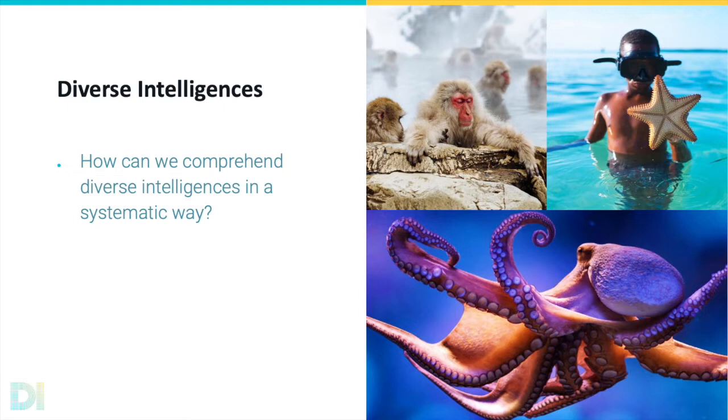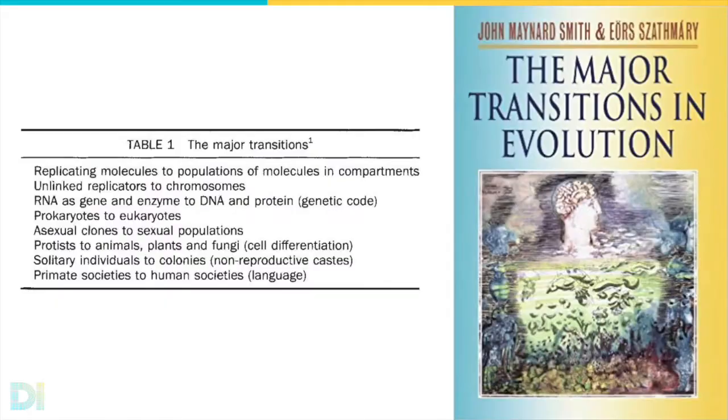Our focus on major transitions comes in part because of the utility of the concept in structuring debates in evolutionary biology. In the mid-1990s, the evolutionary biologists John Maynard Smith and Ars Shathmari identified several major evolutionary transitions which made possible radically different forms of life. These transitions included events such as the origins of eukaryotes and multicellular organisms.